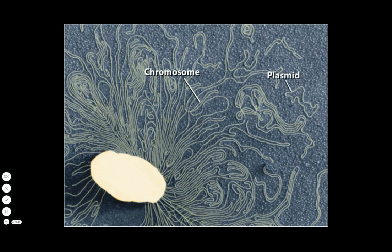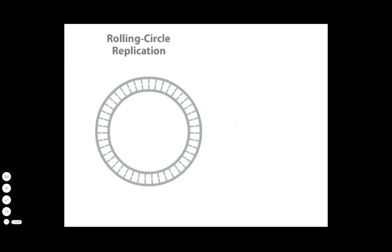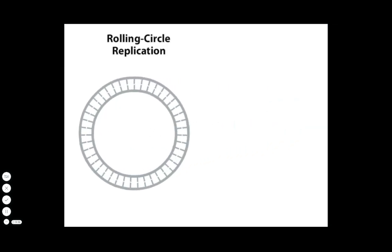For many plasmids, replication is not tied to chromosomal replication. Many plasmids replicate autonomously by a method called rolling circle replication.